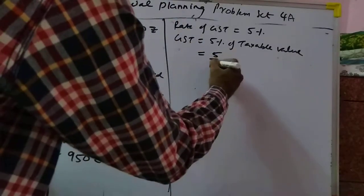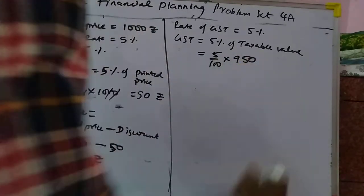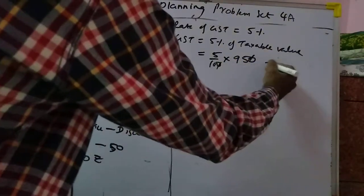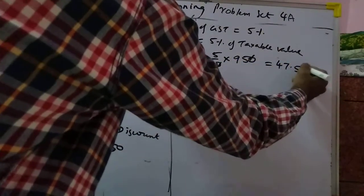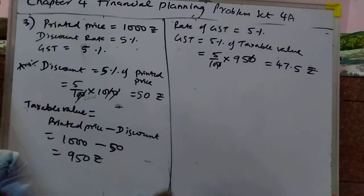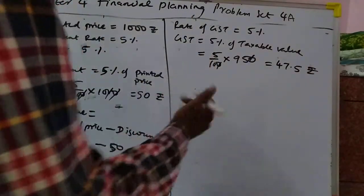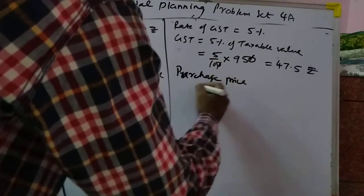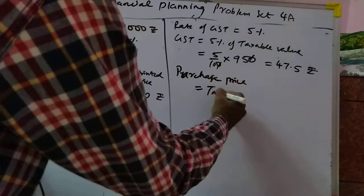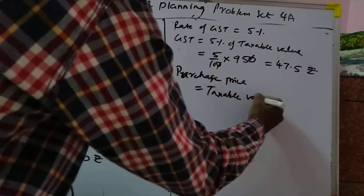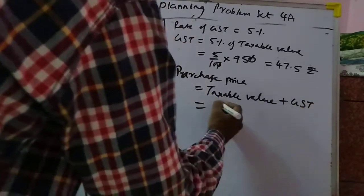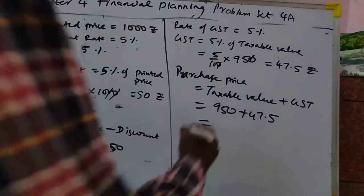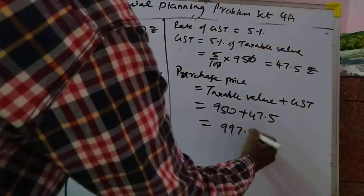GST is equal to 5 upon 100 into 950. Cut the zeros and multiply, and you will get 47.5 rupees. So now purchase price is equal to taxable value plus GST: 950 plus 47.5, and you will get 997.50 rupees.